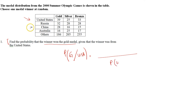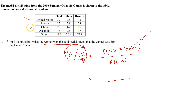In the denominator, write the total for USA (39 + 25 + 33 = 97). In the numerator, write the number of USA people who won gold medals, which is 39. So the probability is 39/97. The key trick: whatever comes after 'given that' goes in the denominator; then put the intersection value on top.